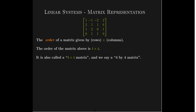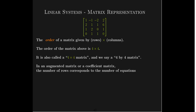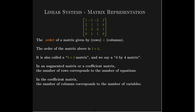In an augmented matrix or in a coefficient matrix, the number of rows tells us the number of equations — each row represents an equation. For the coefficient matrix, the columns correspond to the number of variables. So just by looking at an augmented matrix, you can see how many equations were in the system and how many variables were in the system.